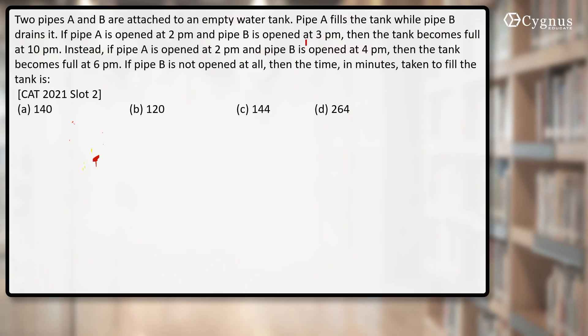Instead, if pipe A is opened at 2 p.m. and pipe B is opened at 4 p.m., then the tank becomes full at 6 p.m. If pipe B is not opened at all, then the time in minutes taken to fill the whole tank is what we need to find.